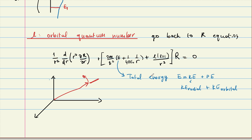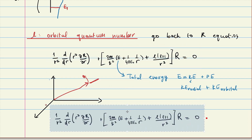If we want to separate the equation, there should be no orbital kinetic energy inside the r equation. So either this equation is wrong or we have to find a remedy. A reasonable thing to look for is some cancellation so that K_orbital drops out. Let's rewrite the equation and see what may cancel what.